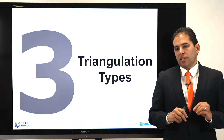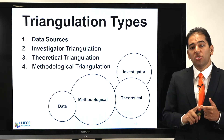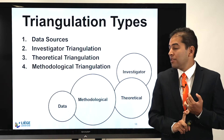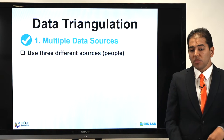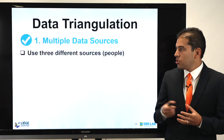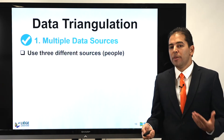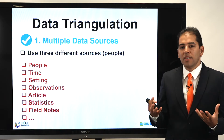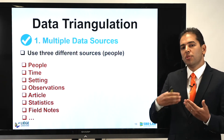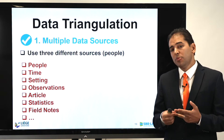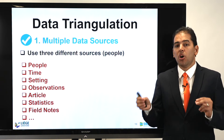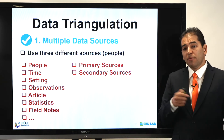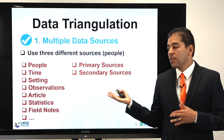There are four types of triangulation. Number one is triangulation based on data sources. Number two, triangulation based on investigators. Number three, triangulation based on theoretical basis. And number four, triangulation with different methodological approaches. Data triangulation is simply using multiple data sources — at least three different sources. If the source is literature, diversify your literature; if it's people, change your subjects. We diversify the sources, the people, the time, the setting, the observations, the scientific material, statistics, field studies, and also primary versus secondary sources.